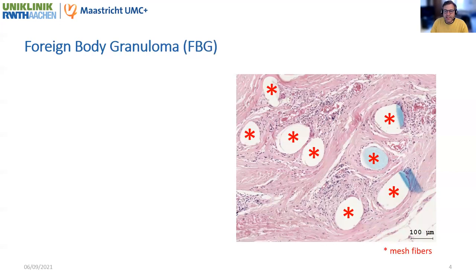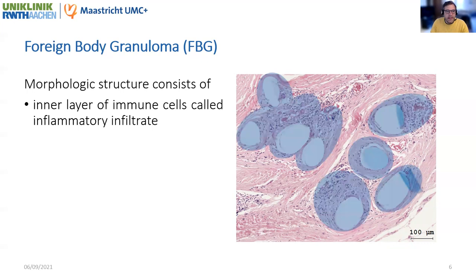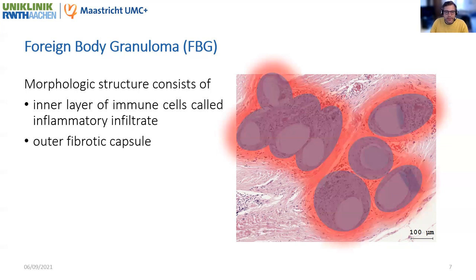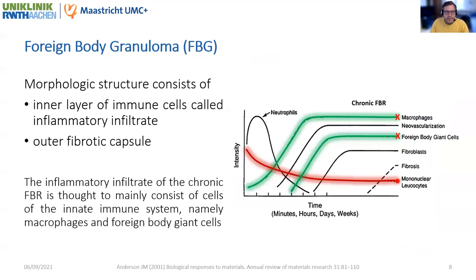In this image, we are seeing an H&E stained tissue section of a typical mesh explant. The fiber locations are marked with asterisks. The foreign body granuloma is a morphologic structure that consists of an inner layer of immune cells called inflammatory infiltrate, surrounded by an outer fibrotic capsule. The inflammatory infiltrate of the chronic foreign body reaction is thought to mainly consist of cells of the innate immune system, namely macrophages and macrophage-fused foreign body giant cells. Since macrophages play key roles in all phases of wound healing and are constantly present at the interface of foreign bodies, they are held responsible for the chronic inflammatory process, and literature dealing with the foreign body reaction mostly focuses on them.